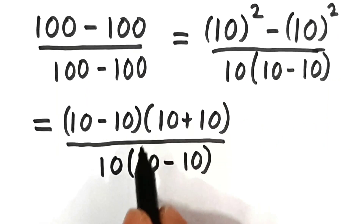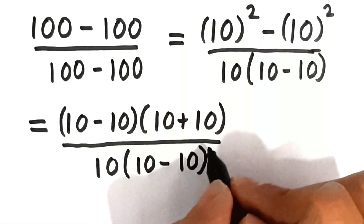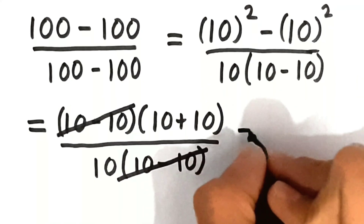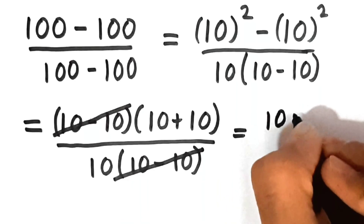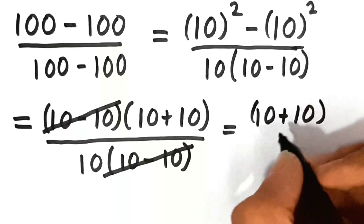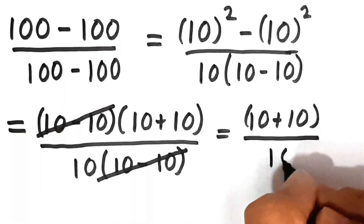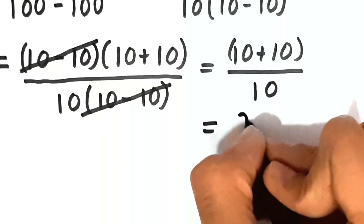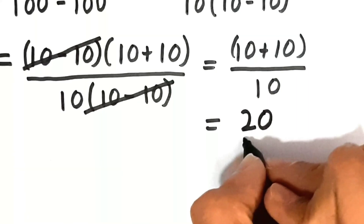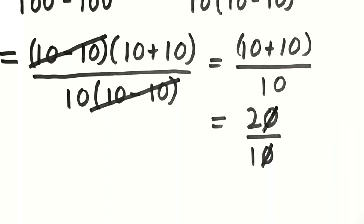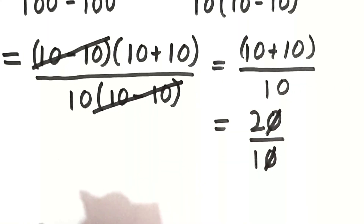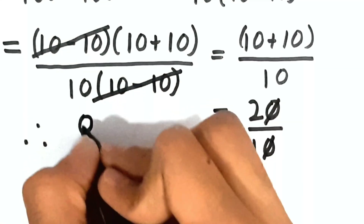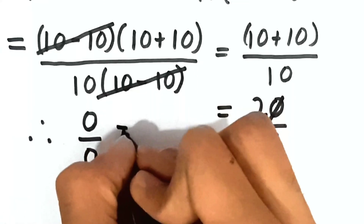As everything is in multiplication, we can cancel the common factors. The (10 minus 10) at both the numerator and denominator gets cancelled out. The remaining expression is (10 plus 10) upon 10. So 10 plus 10 is 20, giving us 20 divided by 10. Now 20 divided by 10 is 2. Therefore, 0 upon 0 is equal to 2.